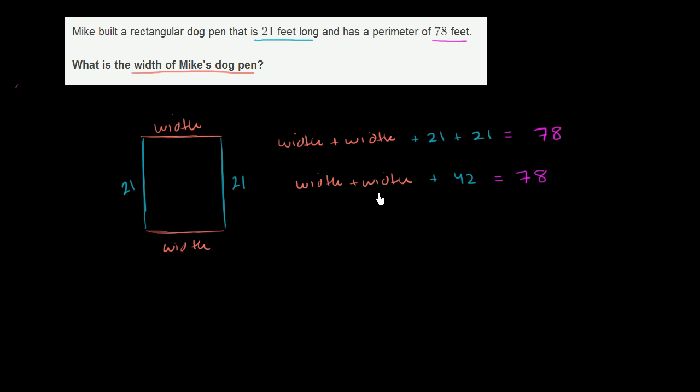So what must the width plus the width be equal to? I have something, I have this thing, plus 42 is equal to 78. So if I have something plus 42 is equal to 78, that means that this something must be 78 minus 42. So let's write that down.